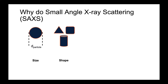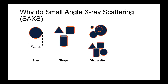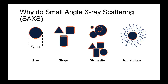SAXS isn't just limited to spherical particles or any one particular sample. If your sample can scatter x-rays, it can be characterized using SAXS. Another thing you can do is analyze average particle shapes. Because it's a global average, you'll be getting the average particle shape, but that can be useful for characterizing your sample. You can also look at monodisperse and polydispersed samples.